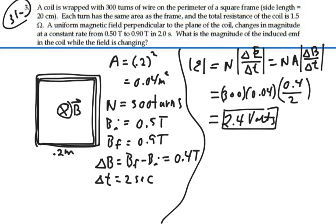If we were to calculate the current that's induced, that would be equal to the induced voltage divided by the resistance. And that would be 2.4 volts divided by 1.5 ohms